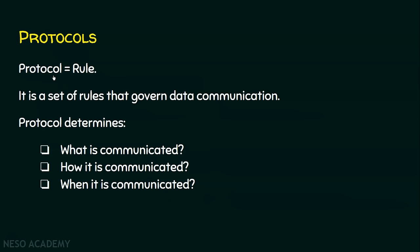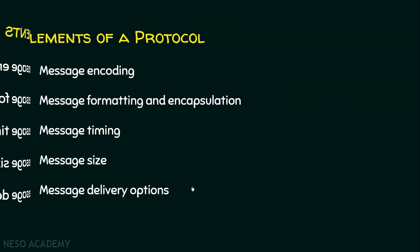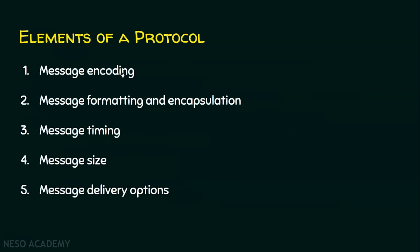Simply, protocol is a rule. These protocols determine what is communicated in the network, how it is communicated, and when it is communicated. In the previous lecture, we have seen there are five elements of a protocol. Let us recapture all five elements.